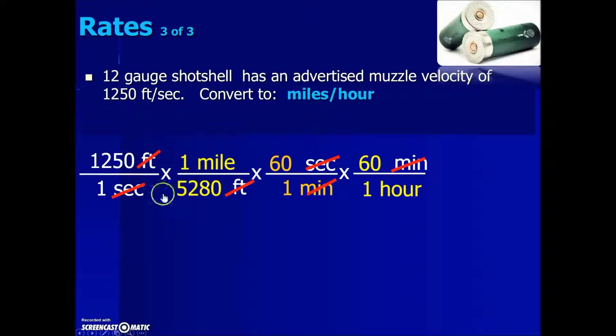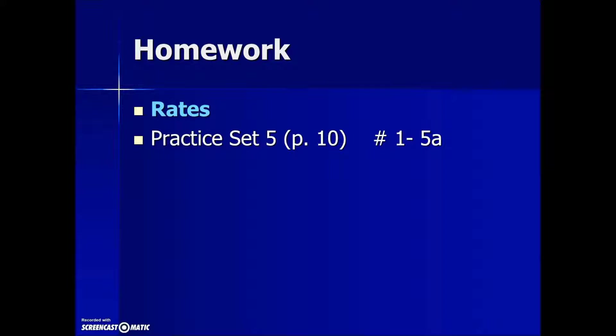Our last step is to multiply the numerator values. 1250 times 60 times 60. Multiply the denominator values together to result in the following. Taking the numerator divided by the denominator value gives us an equivalent of 852.3 miles per hour. For additional practice look at page 10 in your textbook.